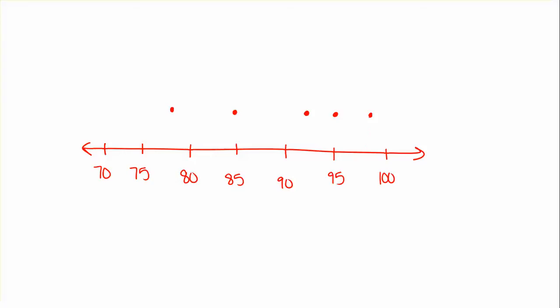When you draw your box and whisker plot, the box goes around your lower quartile and upper quartile, which traps the median inside. Draw a line through the median. Then extend a line from the box out to your lowest value and your highest value — these are the whiskers.